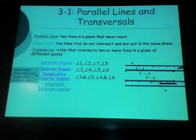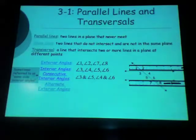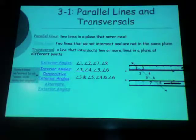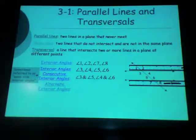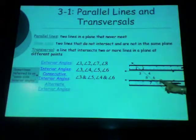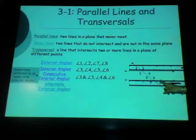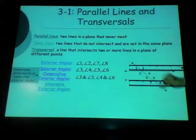Then we have alternate exterior angles. We're looking at seven and eight and one and two — those are your exterior angles. Alternate exterior angles also come in pairs. One would be paired with eight, because one and two are next to each other so they can't be alternate. If you have them on opposite sides of the transversal — see how one is on the left and eight is on the right — two and seven are the other pair. Those are alternate exterior angles.